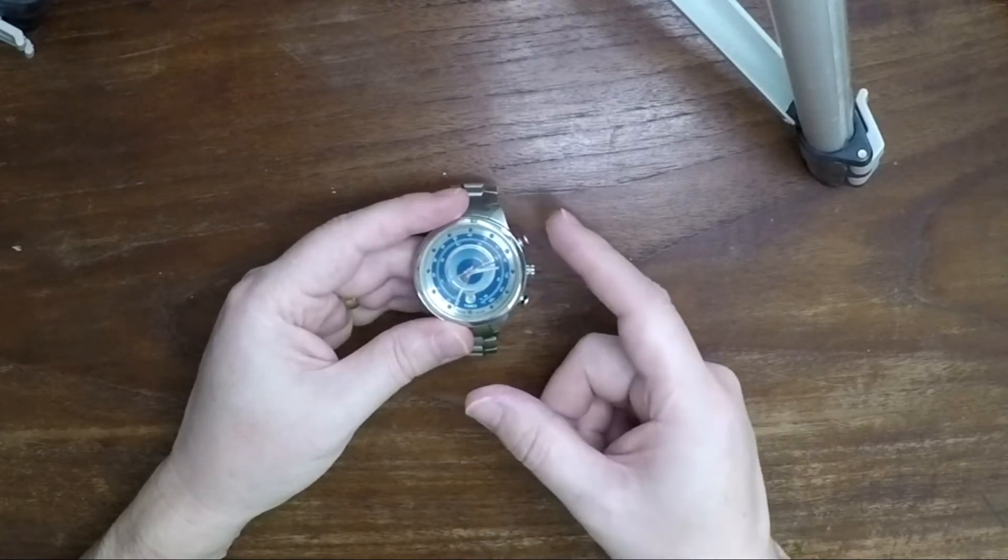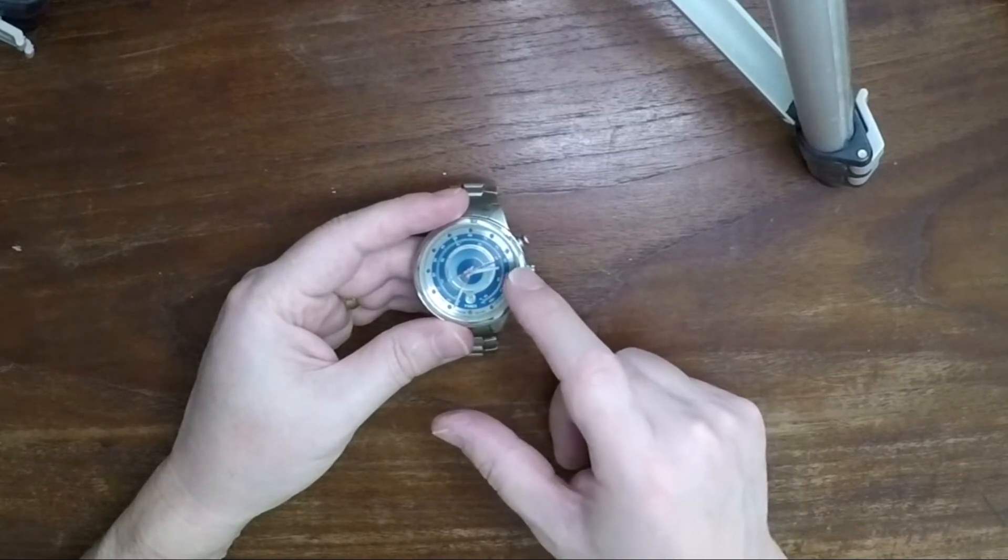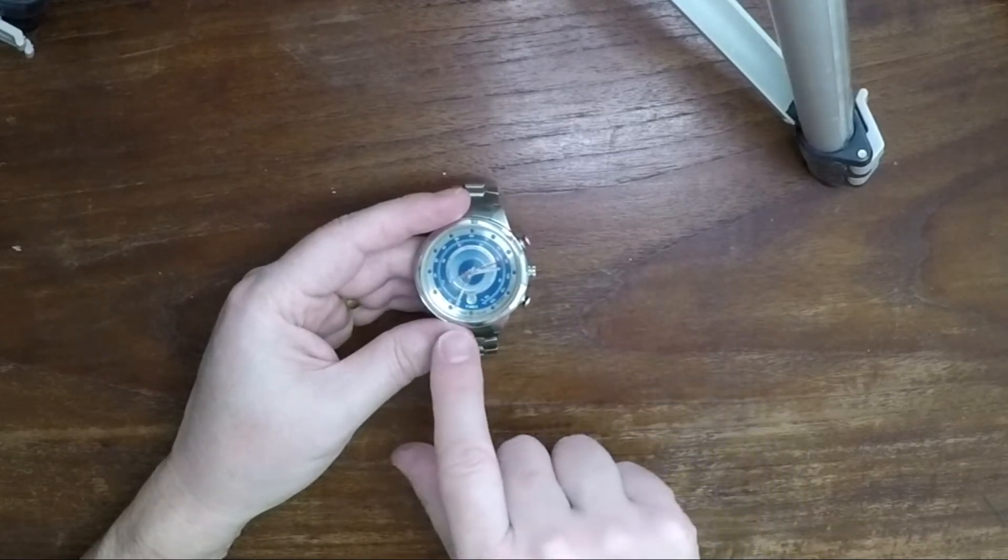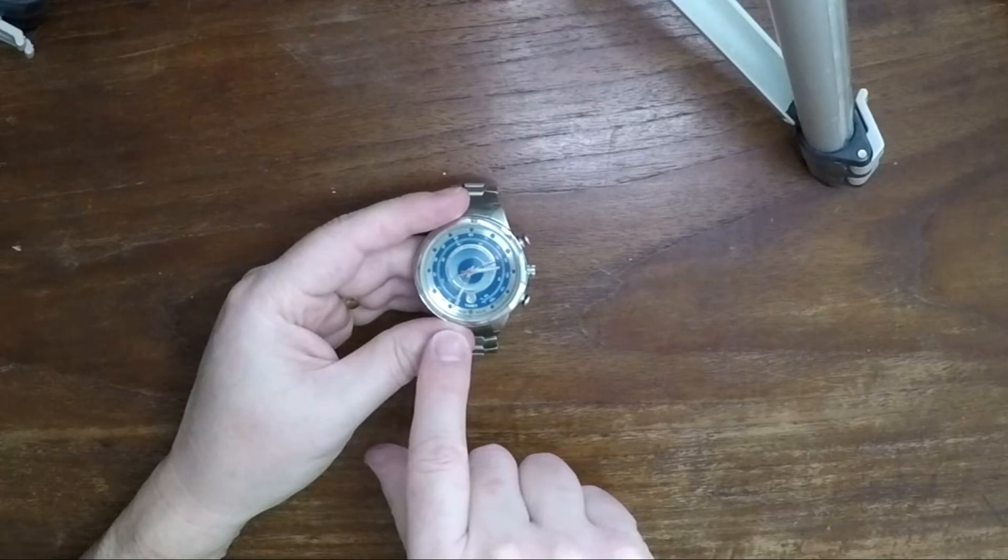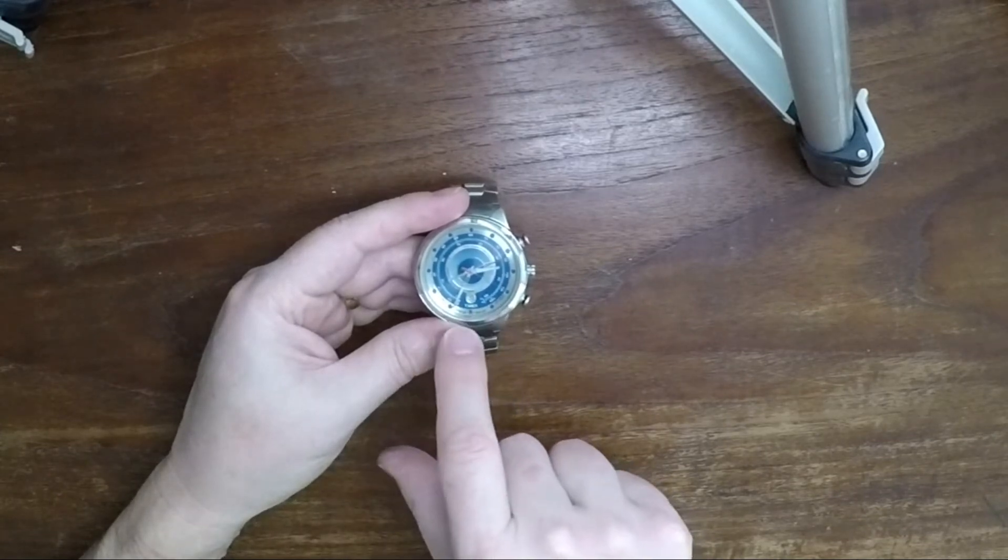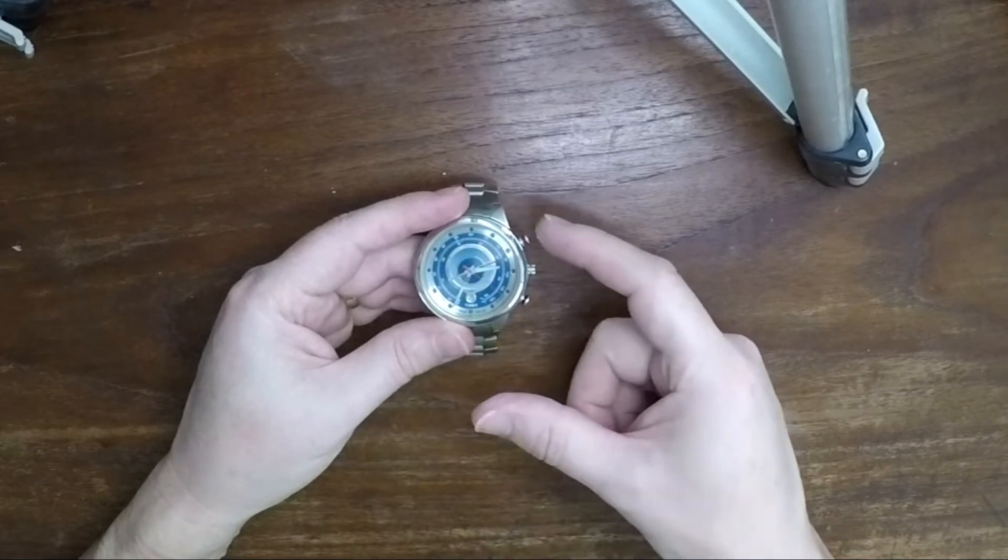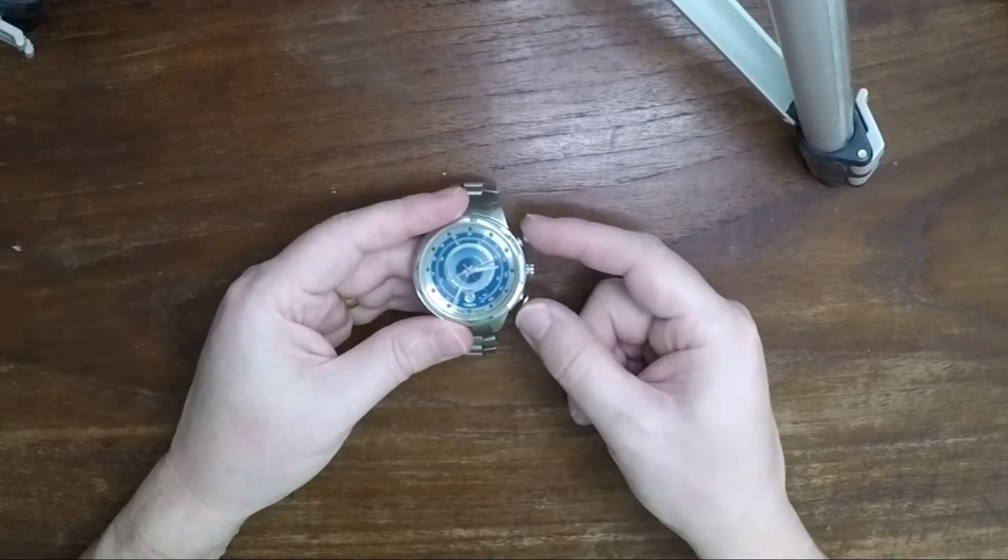When you press the temperature button, the indicator needle is supposed to go all the way around to 630 or so. It says temp right down here. It's supposed to go there first and then go to the correct temperature, and I'll show you what that looks like.